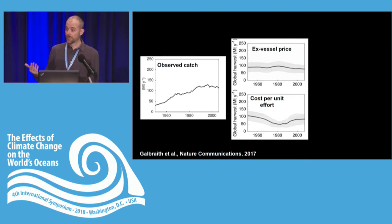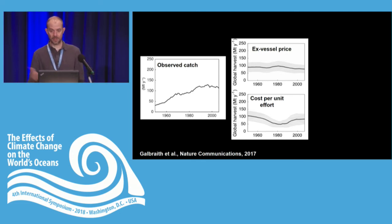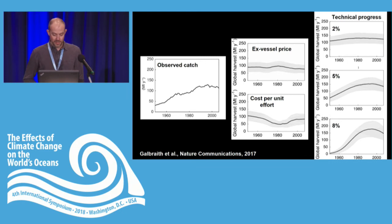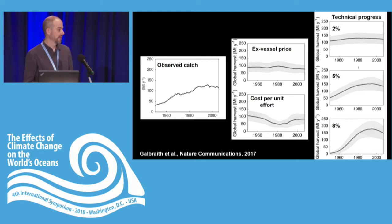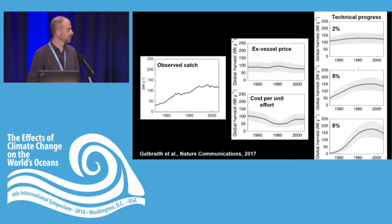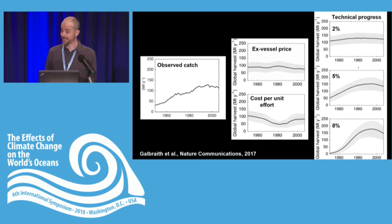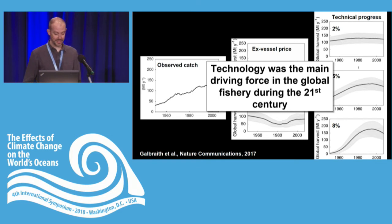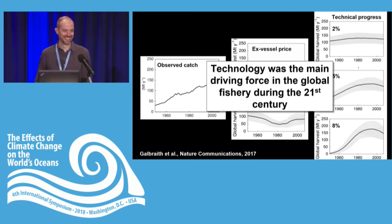Taking the BOATS model and forcing the economics with reconstructed ex-vessel price or cost per unit effort, we do not recover the right shape. However, if we look at catchability — which is essentially where the technology goes, the ability of humans to catch fish with a given amount of effort — all estimates suggest an increase in technology at rates between 2 and 8% per year. Driving the model with that range, we find about the right increase in global catch, with a central value of 5% per year. This is consistent with technology as having been the main driving force in the global fishery during the 20th century.